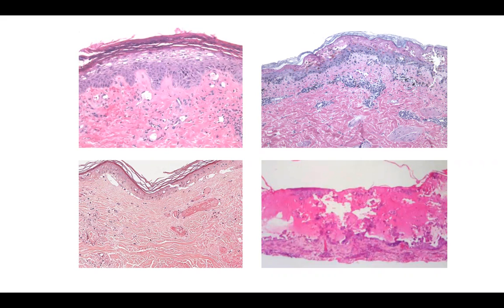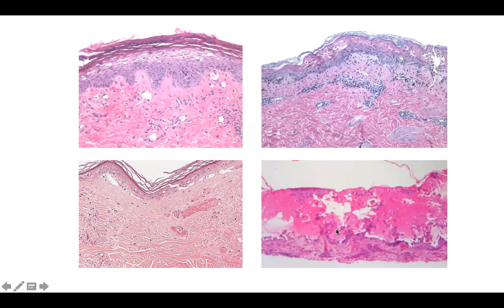Major differences. Confluent parakeratosis, where there are nuclei in the stratum corneum, so it appears darker overall. In contrast, the normal basket-woven stratum corneum, which suggests that the process is acute. Also notice the degree of epidermal necrosis — here it is more superficial versus here it is basically their entire epidermis.